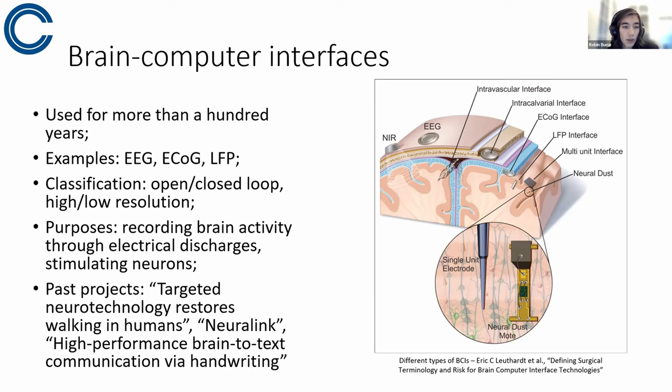So new BCIs are being employed for more precise study and for clinical applications. Examples include EEG, ECoG, and LFP, which can be seen in the image. So EEG are the electrodes that are placed on the scalp. I guess we all know them. ECoG is basically intracranial EEG.